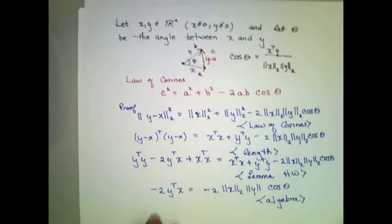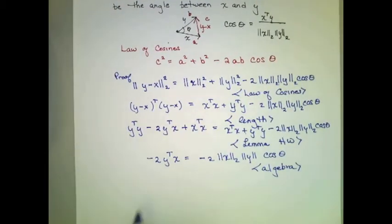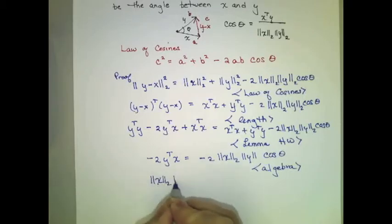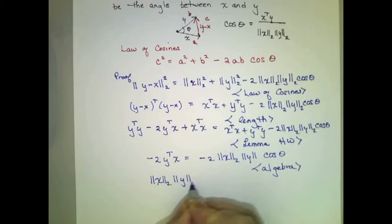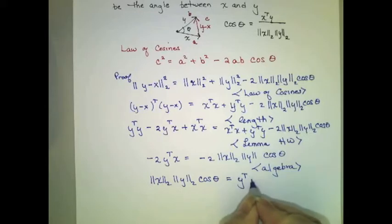Similarly, now, I can simplify this equation and say, multiplying both sides by negative one half and exchanging the left and right hand side. This yields the length of x times the length of y times the cosine of theta is equal to the dot product of y with x. Again, that's just algebra.